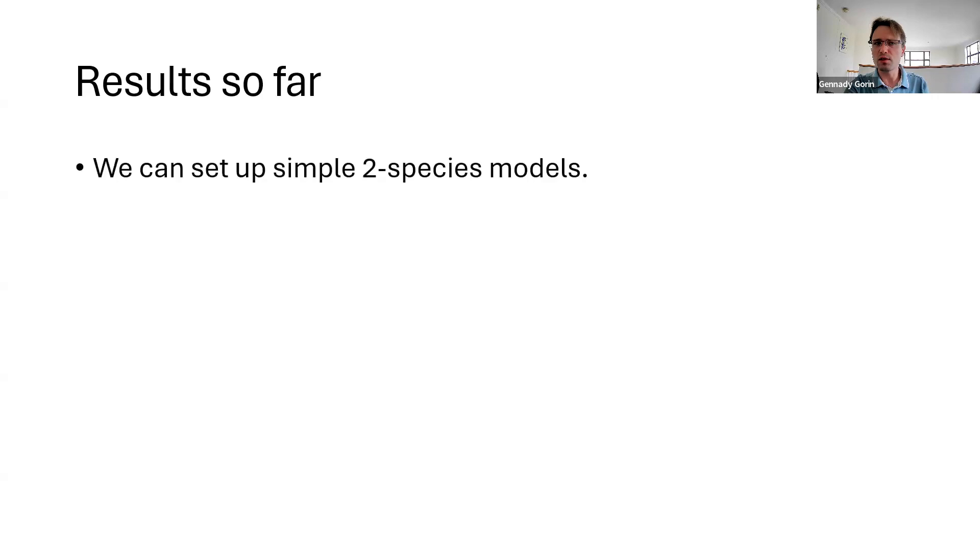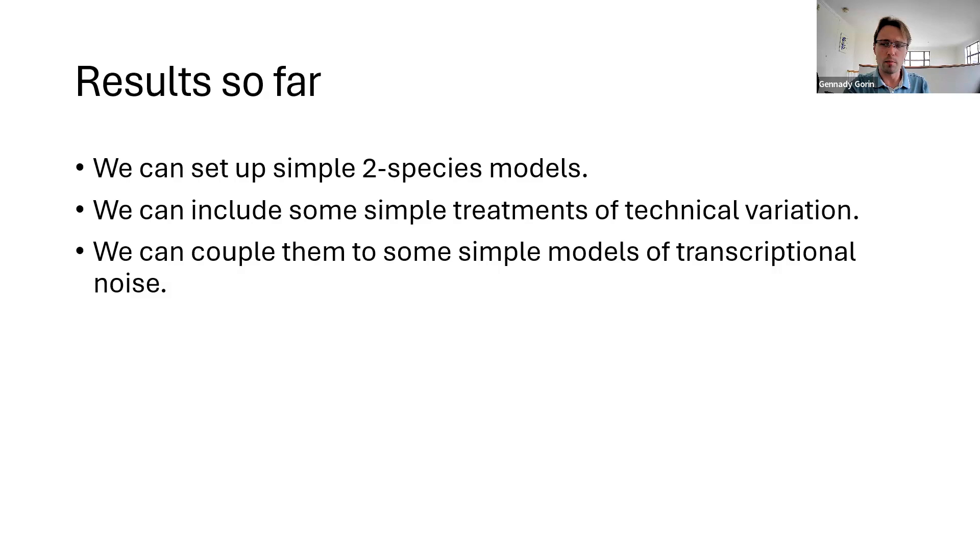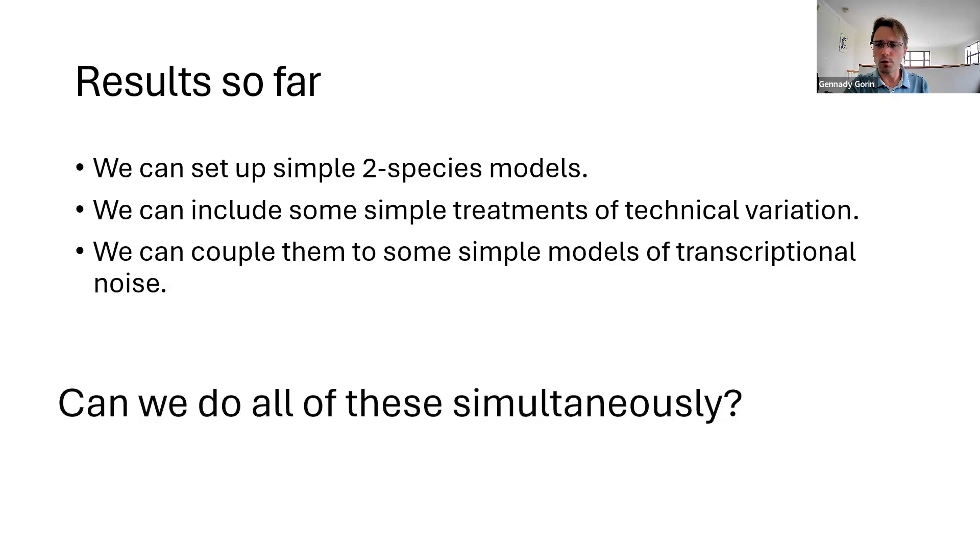So what have we seen so far in practice? Well, we can set up some models with two species, which is good because that's the kind of data we can readily obtain. We can include some simple treatments of technical variation and even look at some models of transcriptional noise that go into a little bit more detail. The crux of my theoretical work has been how generic can we make this while keeping this problem still crackable?